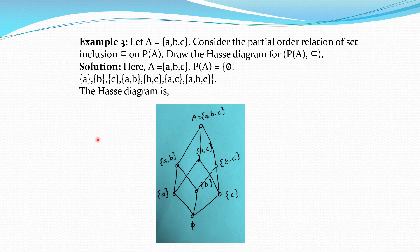Now consider {a}: {a} is a subset of {a,b} and {a,b,c}. But there exists {a,b} such that {a} ⊆ {a,b} ⊆ {a,b,c}. So {a} related to {a,b,c} is obtained by transitivity and can be shown through {a,b}. Since {a} is directly related to {a,b}, above {a} we show {a,b} and draw the line segment.